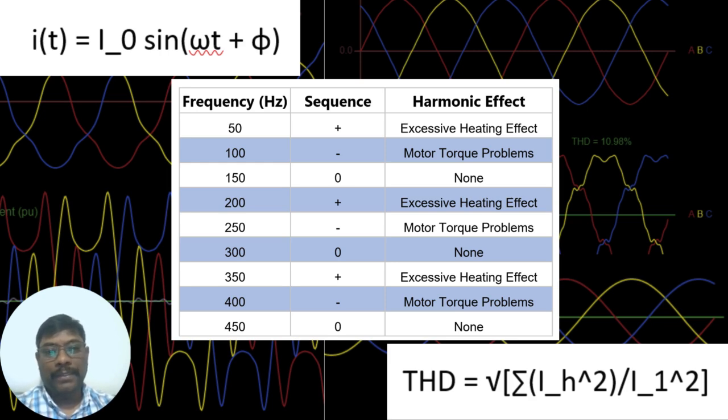We know positive sequence, negative sequence, and zero sequence components present in the system. How does it apply to the harmonics? If you see in the table...